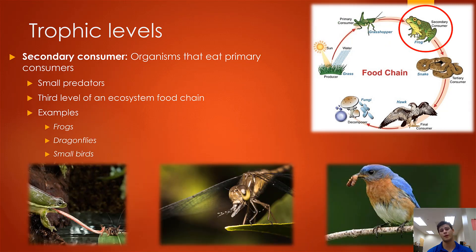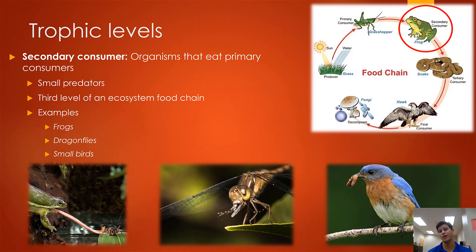Moving another rung up, we reach our secondary consumers — organisms that eat primary consumers, so these are your smaller predators at the third level of the food chain. Usually insects are the primary consumers in most complex ecosystems, so secondary consumers are most often animals that eat insects. Examples include a frog eating a cricket, a dragonfly eating a fly, or a bird eating a caterpillar or worm.